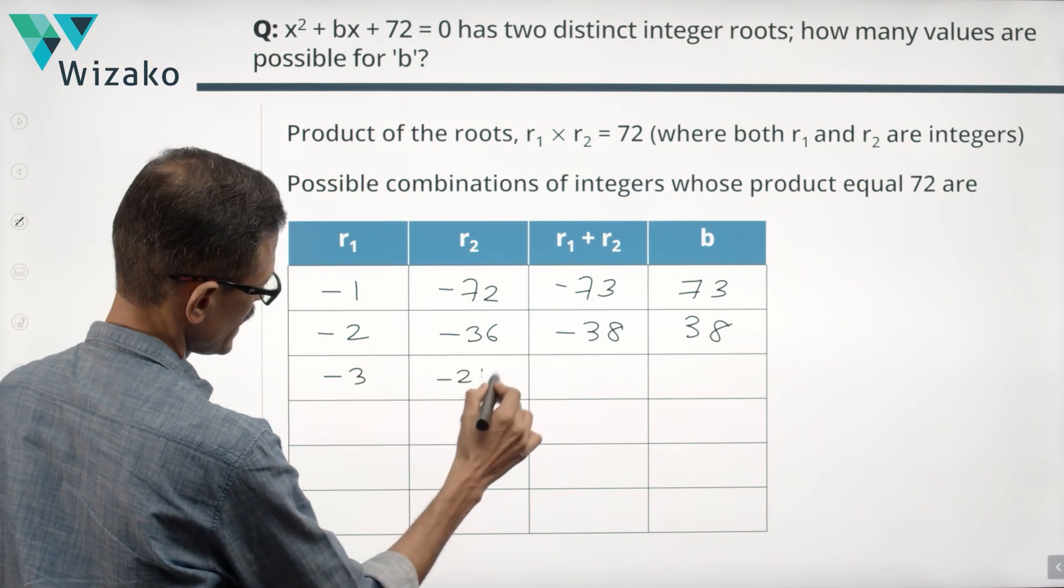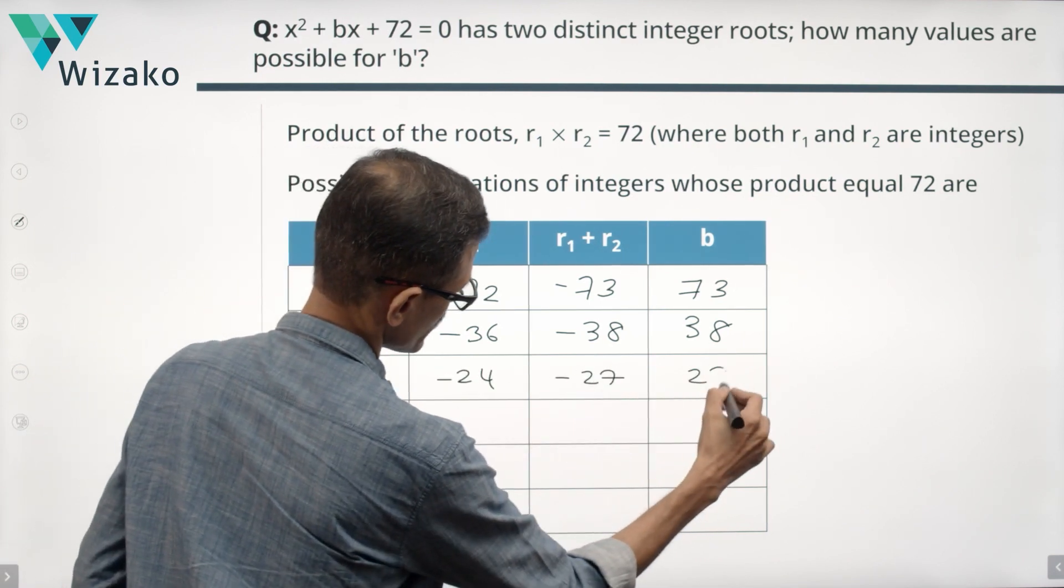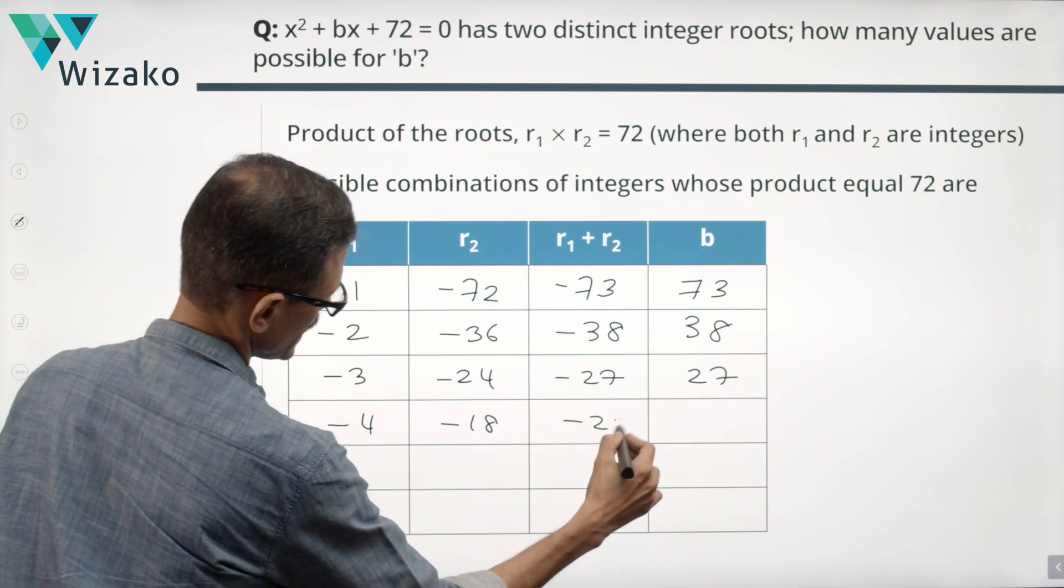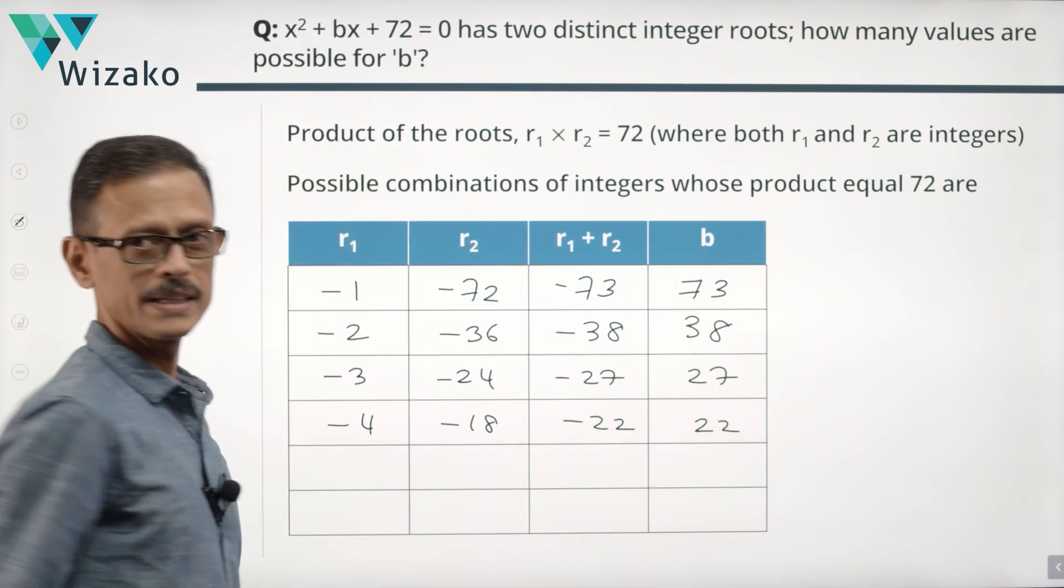Minus 3, minus 24, minus 27, plus 27. Minus 4, minus 18, minus 22. Value of B is plus 22.